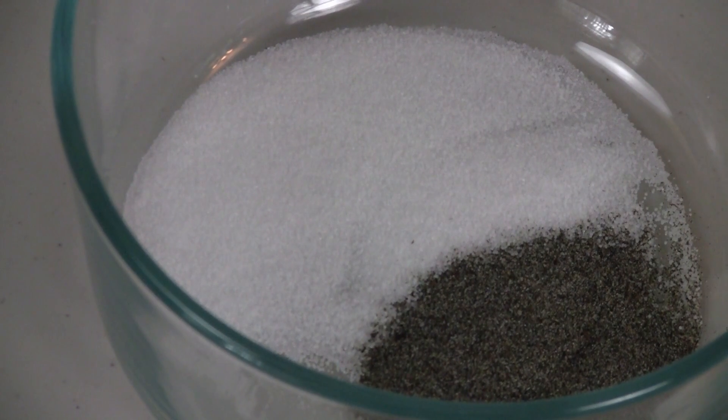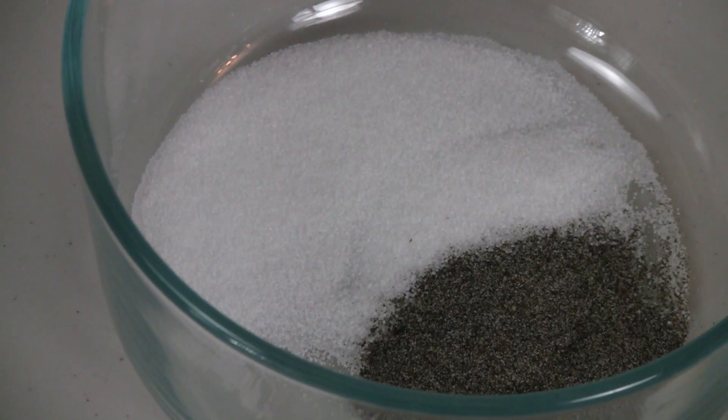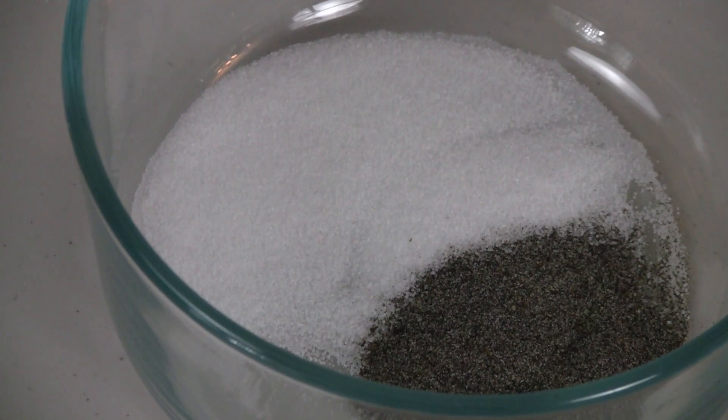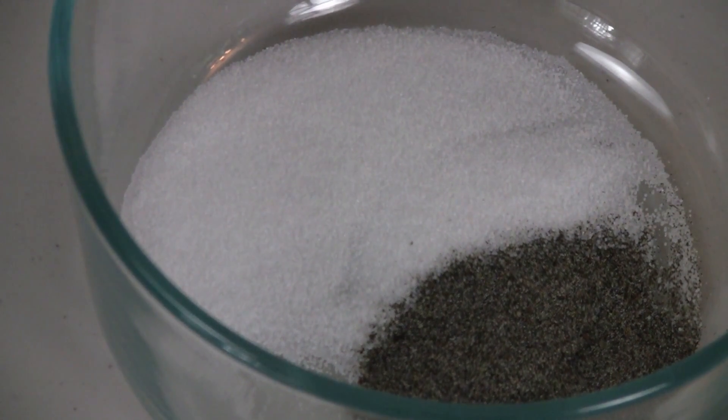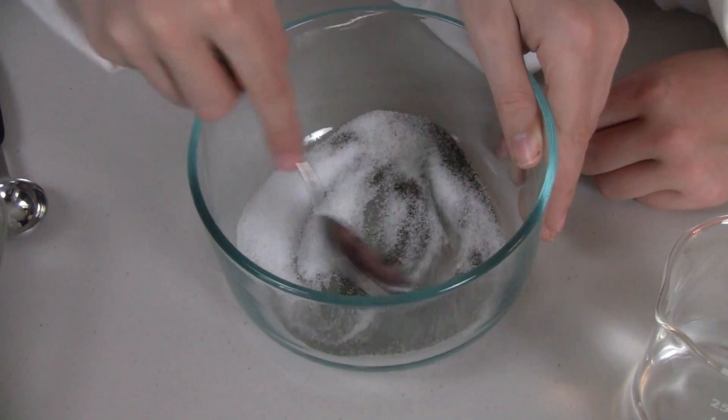We are looking at the coarseness of the sand and the salt, which are both kind of grainy. And the salt crystals are slightly larger than the sand crystals. Now we are stirring them with a spoon, stirring them together.